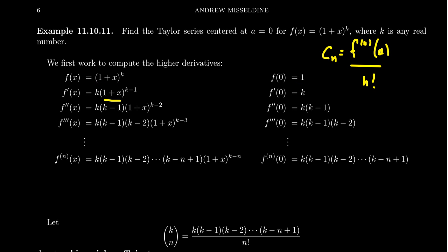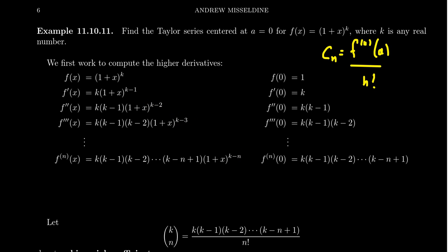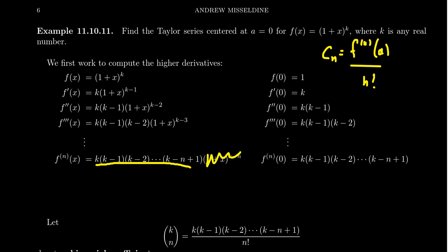For the first derivative, plugging in zero gives 1^(k-1), leaving just k. For the second derivative, x = 0 removes the x term so (1+x) becomes 1 to any power, which is one. This is the beauty of centering at zero — no matter what power of (1+x) we have, plugging in zero always gives one. So the only surviving terms are the coefficient factors: the third derivative at zero is k(k-1)(k-2), and the nth derivative at zero is k(k-1)(k-2)···(k-n+1).